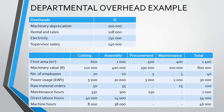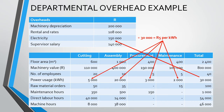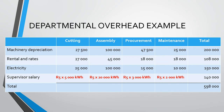On to our next cost: electricity. Electricity would probably be best explained by power usage. We can divide our cost of 150,000 Rand by the 30,000 kWh to arrive at a cost of 5 Rand per kWh. We then multiply the 5 Rand per kWh by each individual department's power usage. This provides us with the electricity allocation for each department, which again adds up to the total electricity expense.